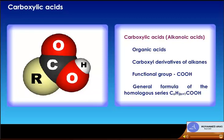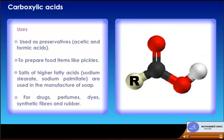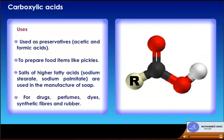Uses of carboxylic acids: used as preservatives; acetic and formic acids are used to prepare food items like pickles; salts of higher fatty acids such as sodium stearate and sodium palmitate are used in the manufacture of soap; used for drugs, perfumes, dyes, synthetic fibers, and rubber.